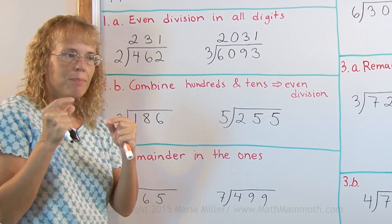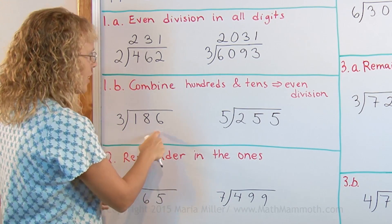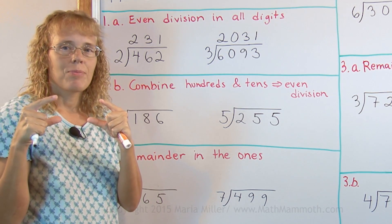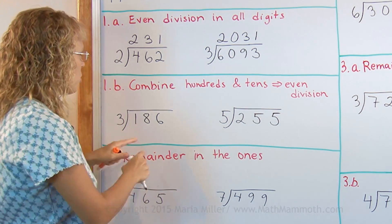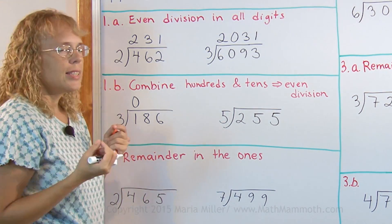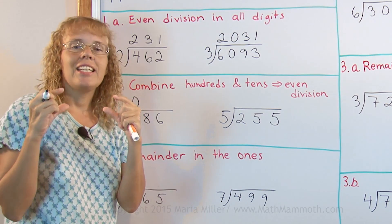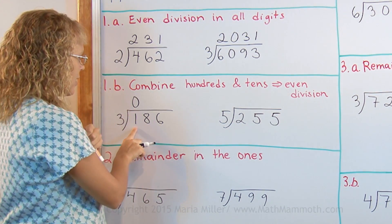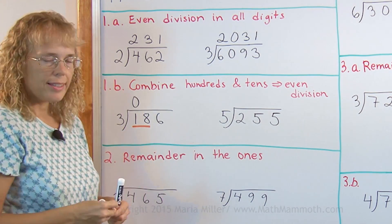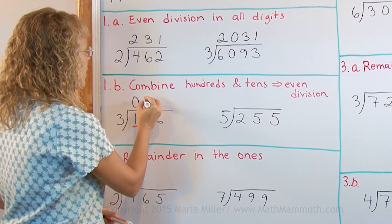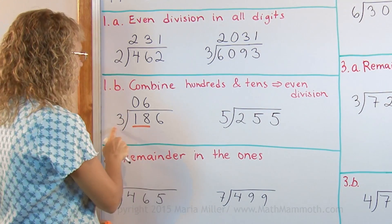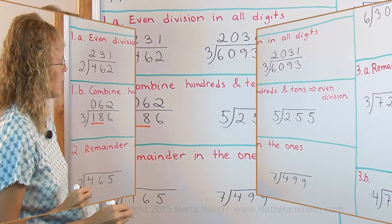Imagine there's a 100 dollar bill, 8 ten dollar bills, and 6 one dollar bills. You have that one 100 dollar bill and you cannot share it evenly between 3 people, so you put 0 there — 3 does not go into 1. Instead, you exchange the 100 dollar bill for 10 ten dollar bills, giving you 10 plus 8, or a total of 18 ten dollar bills. Then you think: 3 goes into 18 six times. Lastly, you have 6 one dollar bills, and 3 goes into 6 two times.